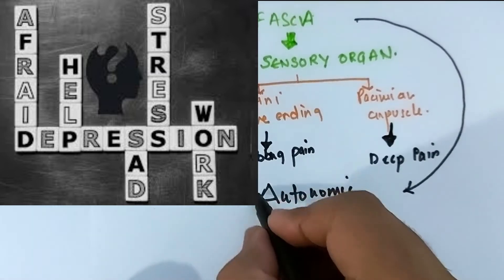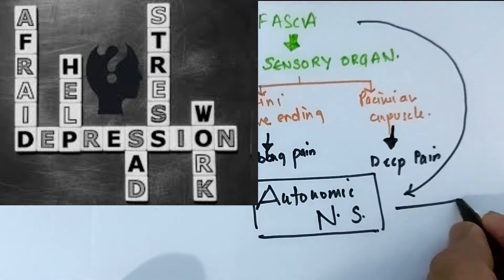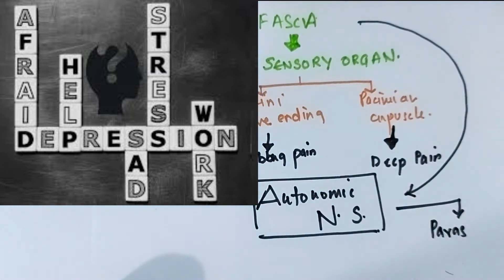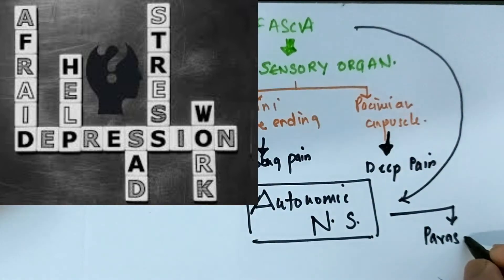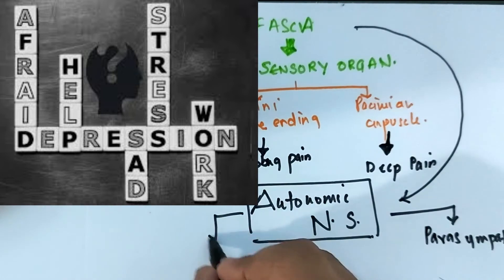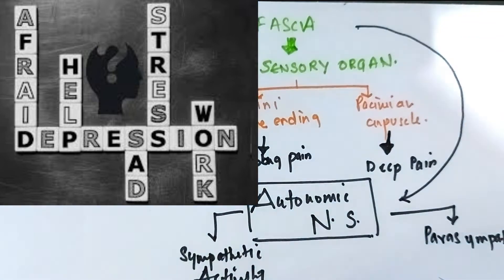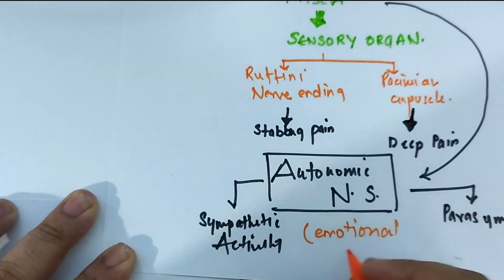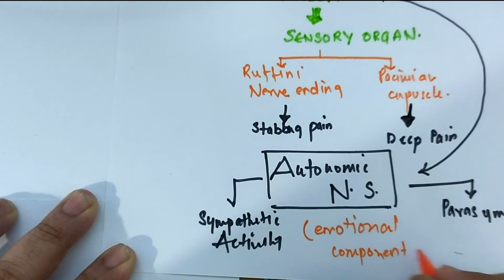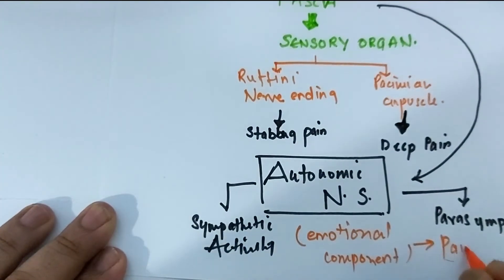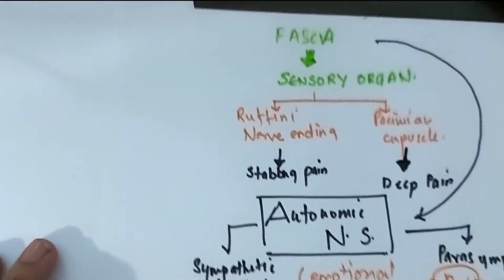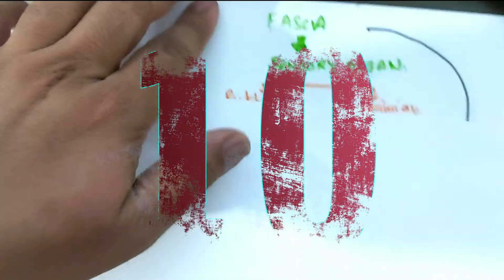Fascia is also connected well with the autonomic nervous system. So in case of fight and flight situations like our sympathetic nervous system or in case of parasympathetic nervous system, fascia responds well to both of these particular nervous systems. Fascia has also been associated with the emotional component attached to that of the pain.